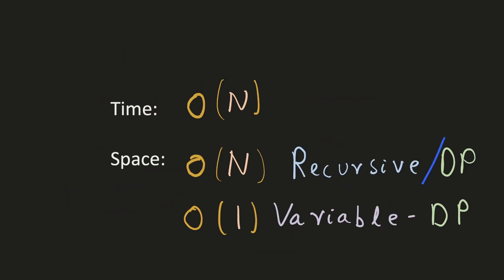The time complexity of this would be O(n) because we have to calculate the result for each position. The space complexity would be O(n) in the case of the recursive memoization solution and the tabular DP solution, but in our variable DP solution, we would only store two previous results, hence it would be constant.